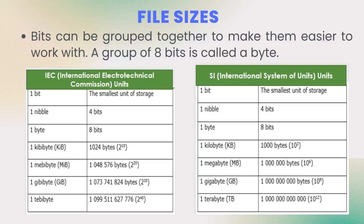There is a small difference in units due to two standards: the IEC standard versus the SI standard, as shown in the two tables. The prefix kilo means thousand, but because computers use binary or base-2 numbering, a kibibyte is actually equal to 2 to the power of 10, which is 1024 bytes. According to the SI standard, there are 1000 bytes in a kilobyte. Please see the difference in the two tables.